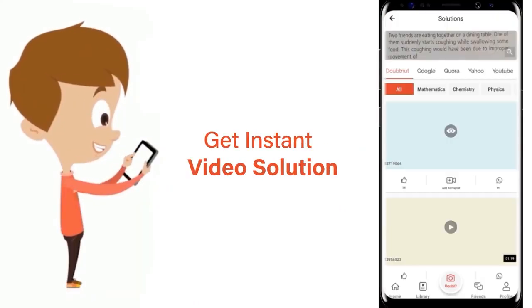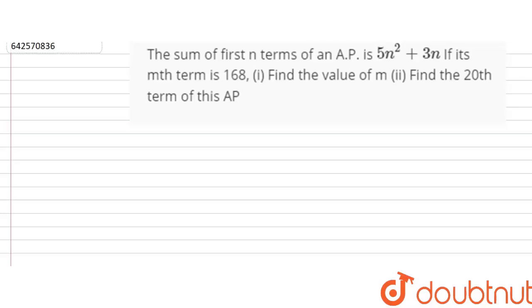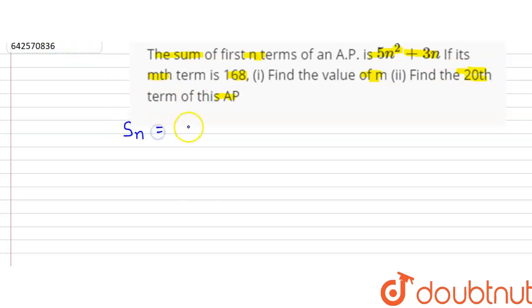The question is: the sum of first n terms of an AP is 5n² + 3n. If its mth term is 168, then we have to find the value of m, and we have to find the 20th term of the AP. In the question, it is given that the sum of n terms equals 5n² + 3n.